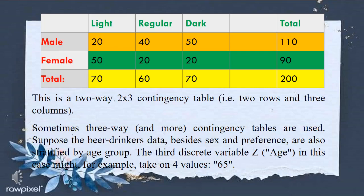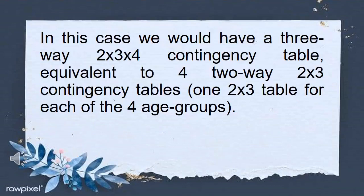This is a two-way, two-by-three contingency table — two rows and three columns. Sometimes three-way and more contingency tables are used. Suppose the beer drinker data, besides sex and preference, are also stratified by age group — a third discrete variable Z. That variable might take on four values. In this case, we would have a three-way, two-by-three-by-four contingency table, equivalent to four two-by-three contingency tables, one for each of the four age groups.